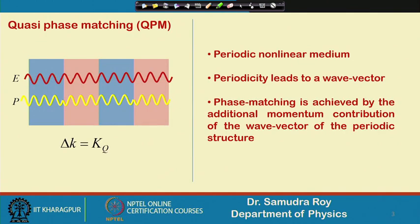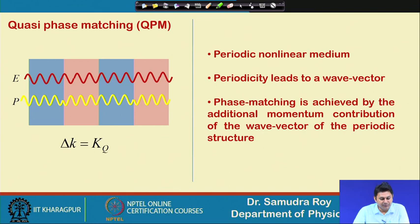We have very briefly described these things in our earlier classes. In quasi phase matching, what we essentially do is introduce some kind of periodicity in the nonlinearity. In a crystal we have several parts, and these parts contain the nonlinear coefficient, but this nonlinear coefficient changes its sign over a certain distance. There is a periodicity, and over a period there will be a sign change. This periodicity of the structure leads to a wave vector we call k_q, and using this wave vector we will compensate the phase mismatch term delta k.